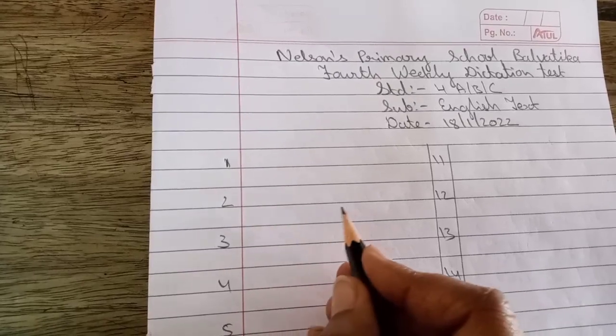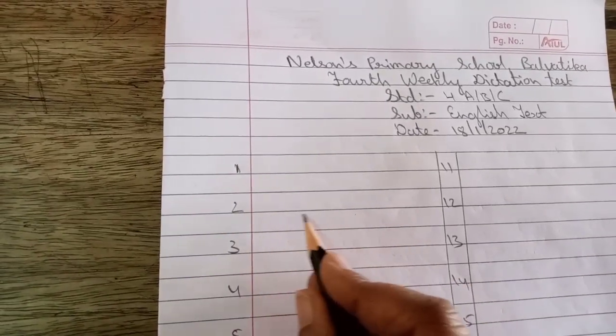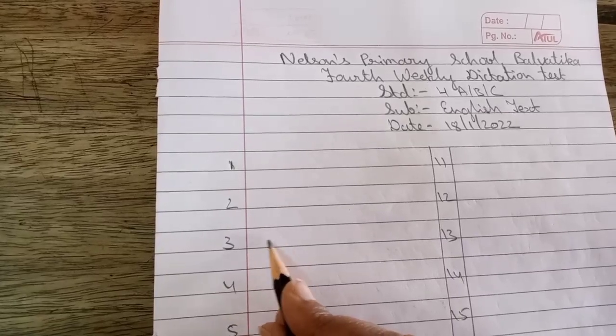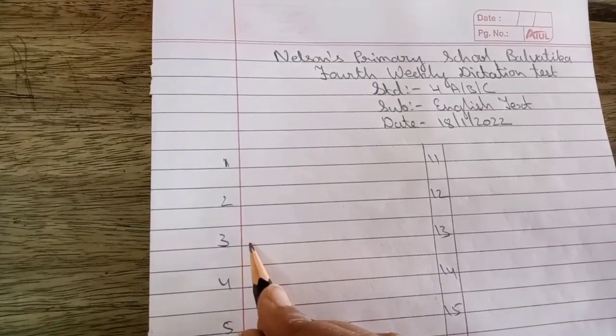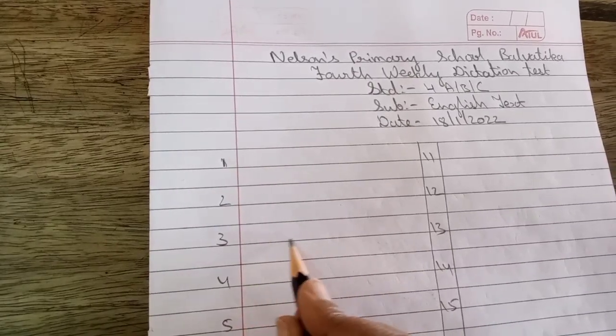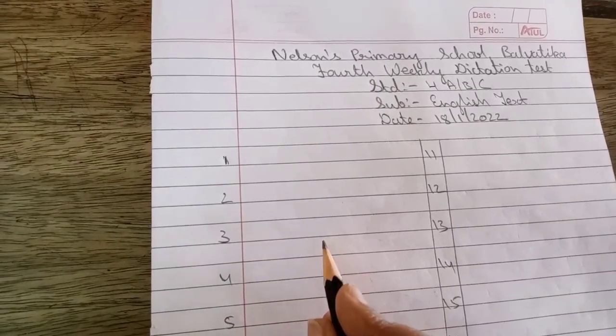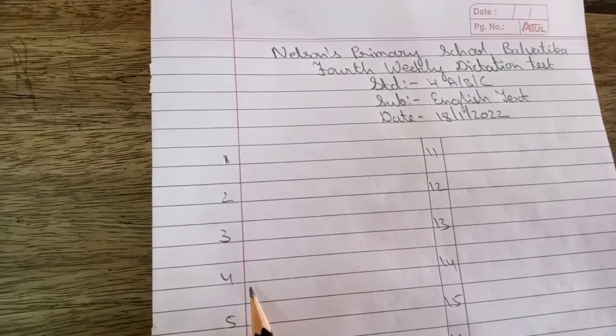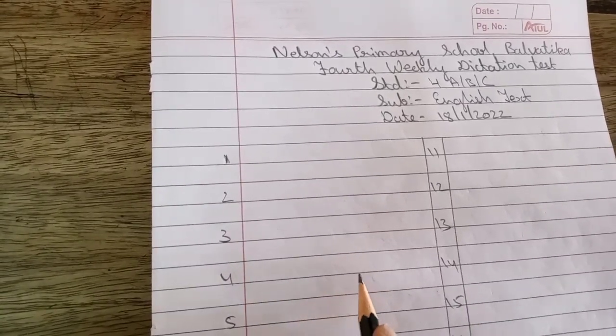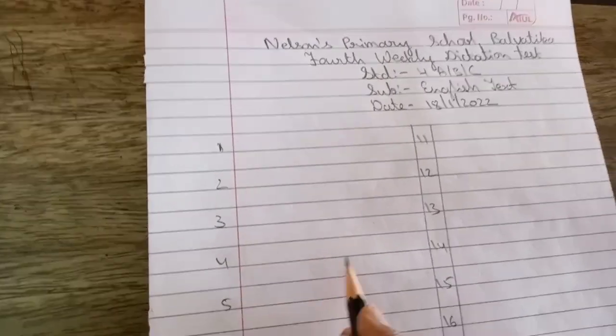Number three: amputate, amputate, amputate, amputate, amputate. Next, number four: unfortunately, unfortunately, unfortunately, unfortunately.